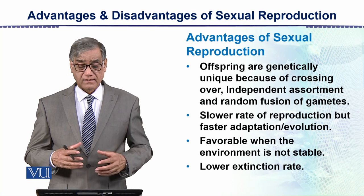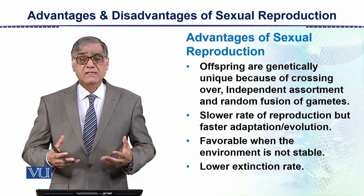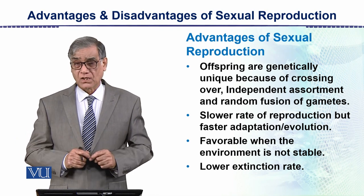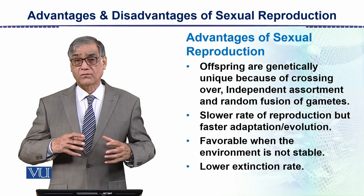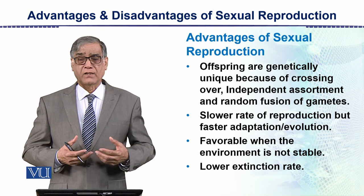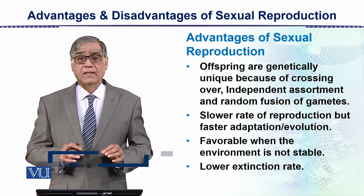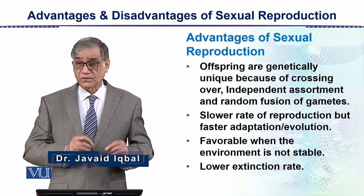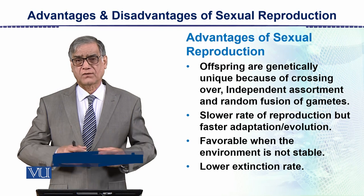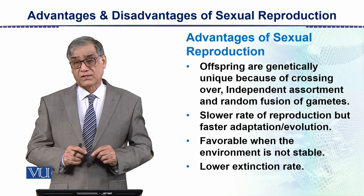First we will discuss the advantages. These gametes are made as a result of meiosis. When meiosis happens, there is always variation — variability is increased. These individuals are not clones; they are not identical to one another, but have genetic variations. This gives them a chance of survival if the environment changes. This is the most important advantage of sexual reproduction.